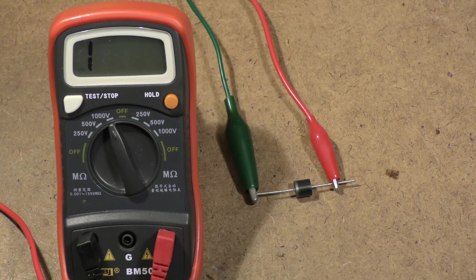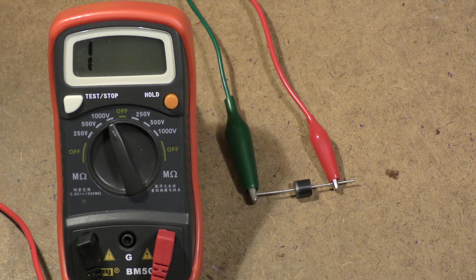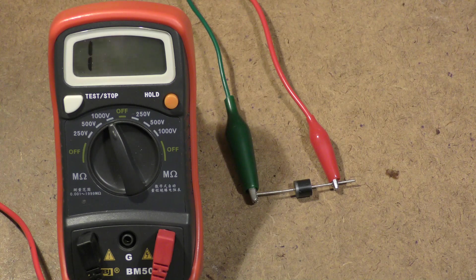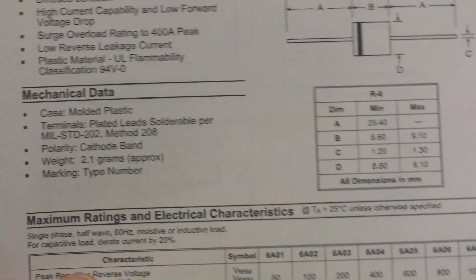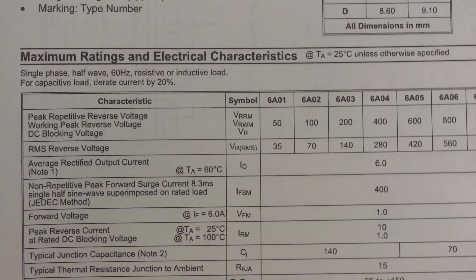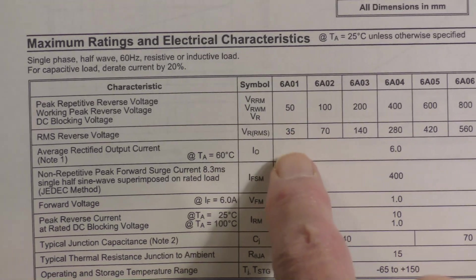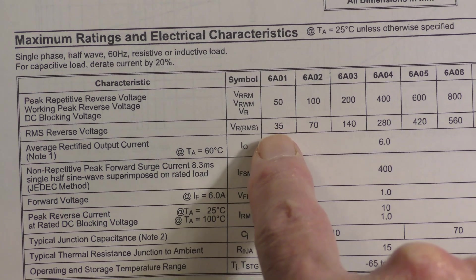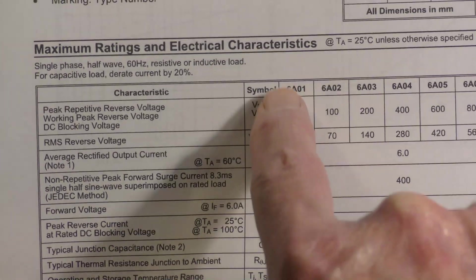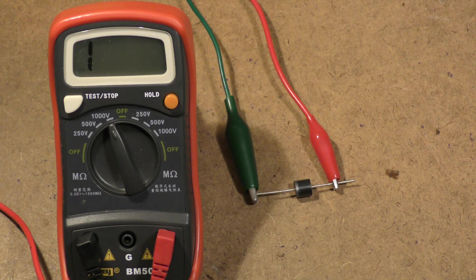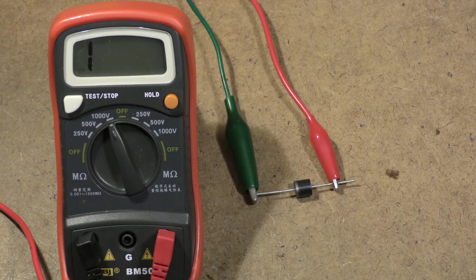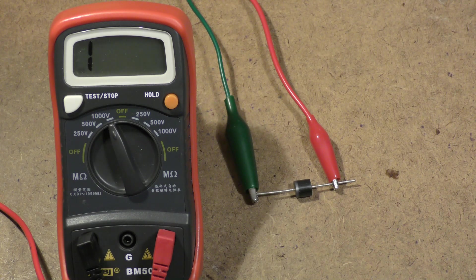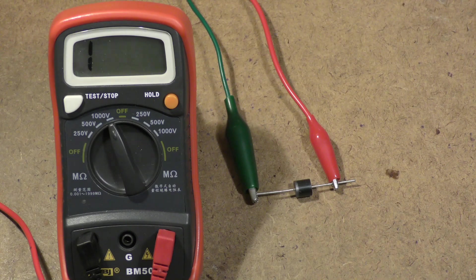What is this diode? This is a 6A01 diode. You may notice that it is rated at 50 volts but only 35 volts RMS, which is the same as the 4001. So why is this one conducting a lot more current? It's because the silicon area in this diode is much larger.